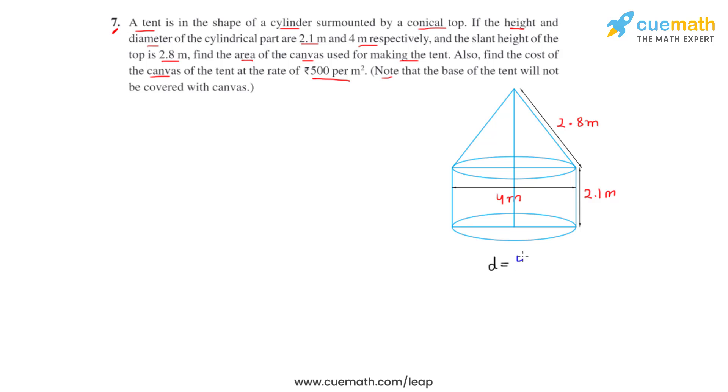So what we can write is the diameter, which is same for both the cylindrical and the conical top, equals 4 meters. Therefore, the radius, which is half the diameter, will be equal to 2 meters. The radius for both the cylindrical part and the conical part will remain same.